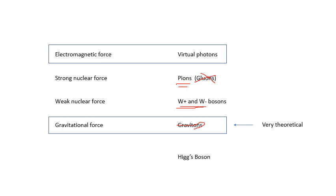The Higgs boson certainly exists — it's been verified at CERN — but we don't need to know that either. What you need to know: virtual photons for the electromagnetic force, pions for the strong nuclear force, and W plus and W minus for the weak nuclear force. Those are the ones you need to know.